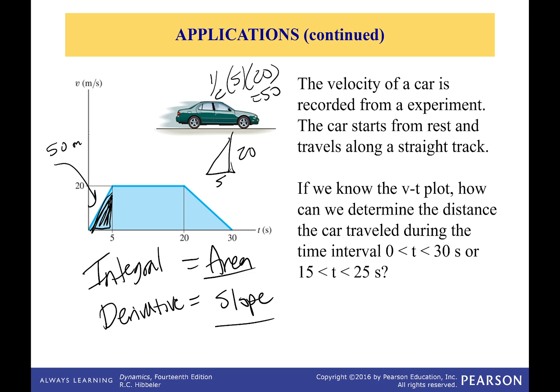If I wanted to find the acceleration, I need to take the slope. That's not too bad. Slope is just simply equal to rise over run. So I rise 20. I run five. The acceleration that first five seconds is equal to four meters per second squared.